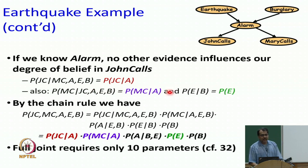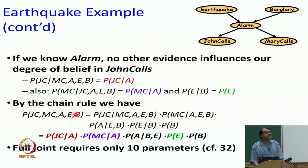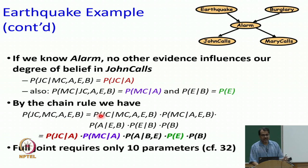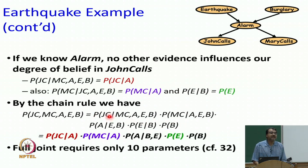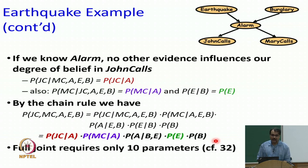We can say some conditional independence holds here. John given Mary, alarm, earthquake, and burglary only depends on alarm. If I know alarm, all the other things do not give me any additional information. Similarly for Mary. We can also say that earthquake and burglary are independent. Given all these conditional independencies, it is very easy to use the chain rule. The joint distribution of John, Mary, earthquake, burglary, and alarm can be written as P(B) × P(E|B) × P(A|E,B) × P(M|A,E,B) × P(J|M,A,E,B). But P(E|B) simplifies to P(E), P(M|A,E,B) simplifies to P(M|A), and P(J|M,A,E,B) simplifies to P(J|A). So the joint becomes: P(earthquake) × P(burglary) × P(alarm|earthquake, burglary) × P(John|alarm) × P(Mary|alarm).